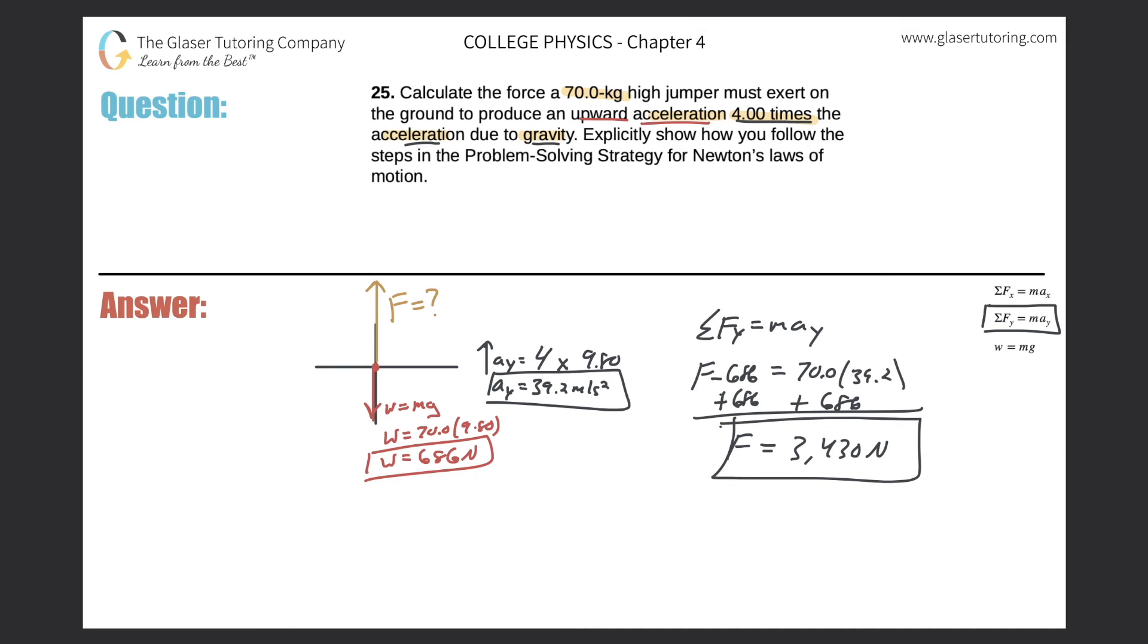And this should make sense. The force is going to be 3430 newtons. And if you look, I had to add the two forces together. I had to add the force to accelerate a 70 kilogram mass by this acceleration. And then not only did the object have to accelerate itself in that way, it also had to overcome the acceleration due to gravity. So that's why I had to add it then. The math is telling me to add it, but it should make sense.